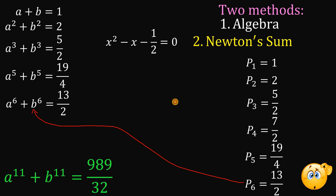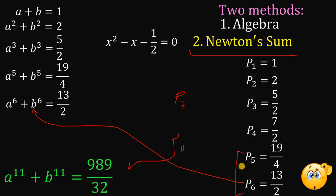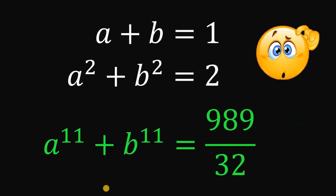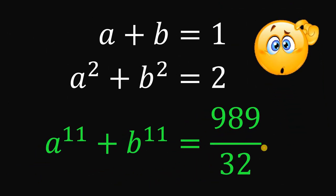You can keep doing this — getting p sub 7 up to p sub 11, which is what we want to find. You can also use both methods: use Newton's Sum to find p sub 5 and p sub 6, then use algebra to multiply them to get a raised to 11 and b raised to 11. Sure enough, our answer to this question is 989 over 32, and as always, we are done.